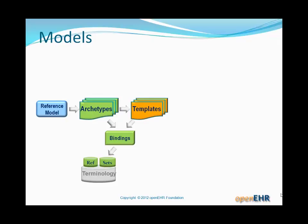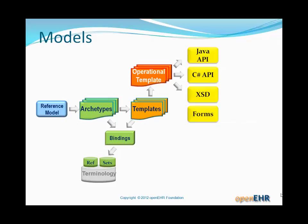We can then define the level of modelling we call templates on top of archetypes. Templates can have bindings to terminology as well — they're likely to have more bindings because they tend to be more specialized, and particular uses of terminology are better known in localized environments rather than for international or very general archetypes. From templates, we build something called an operational template, which we'll explain in due course. From the operational template, we build useful downstream products: programming language APIs, XML schemas, UI forms, and all kinds of other artifacts.